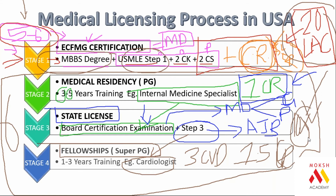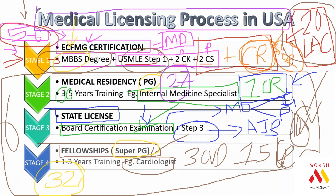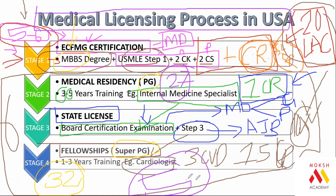Unfortunately, not all of us are economically sound, so economics is equally important to consider. A doctor who does MBBS, PG, and super-PG all in India typically settles at age 32. The same doctor who does MBBS in India but PG abroad — in the US — settles at age 27. So by choosing the American process, you are saving five years of your life, which is very significant from an economics standpoint.